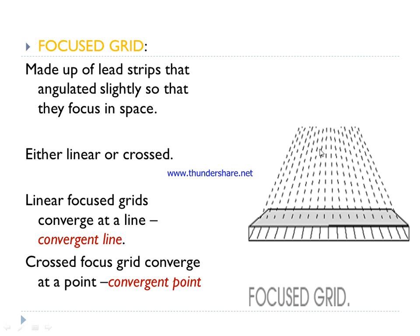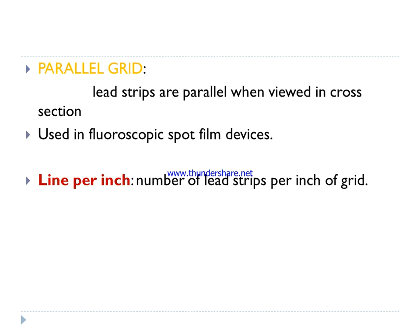In a focus grid, the lead strips are angulated slightly so that they converge toward a focal point or line. This makes the grid focused. In the case of a linear focus grid, the strips converge at a line called the convergent line. For a cross focus grid, convergence occurs at a point called the convergent point.